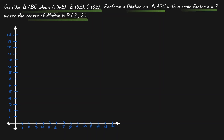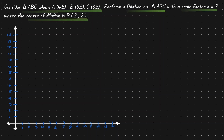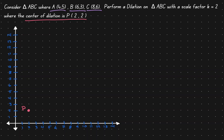We are given coordinate points, so let's turn on our coordinate plane and put all this information in it. Let's start by placing our center of dilation at (2,2), and now let's define our triangle ABC. Remembering that the scale factor is 2, we want to find the distance from P to every vertex and then double it.